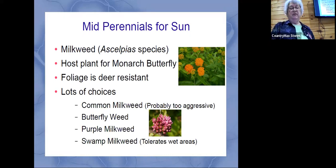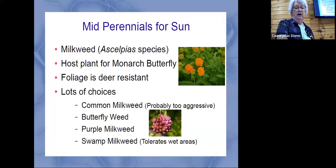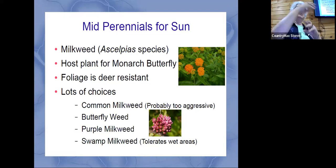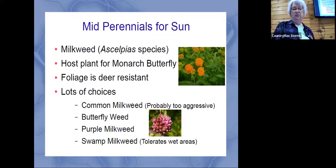Moving into mid-season sun flowers, milkweed is a key plant. There are all the varieties of milkweed you can use. The common milkweed is really quite invasive — when the seed pod puffs open, each thing that flies out is a seed and it's really hard to control. But you don't have to have that common milkweed. You can use butterfly weed, purple milkweed, or swamp milkweed if you have wet areas. There are really some plants that you can put in for any area.